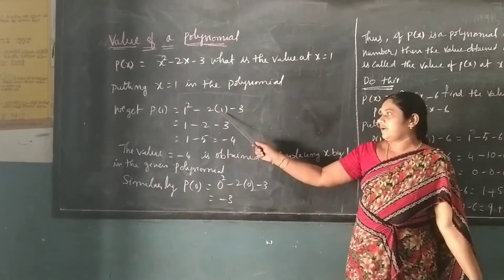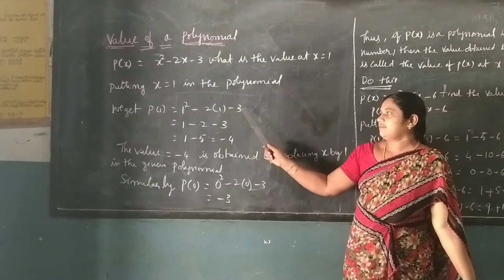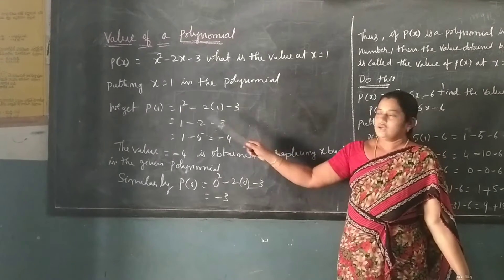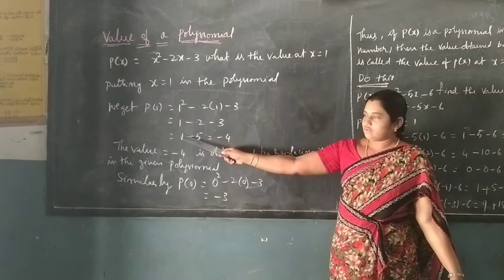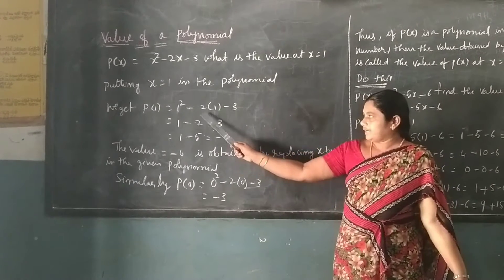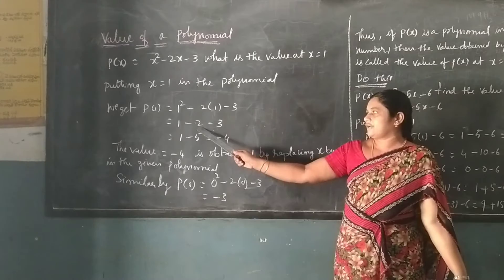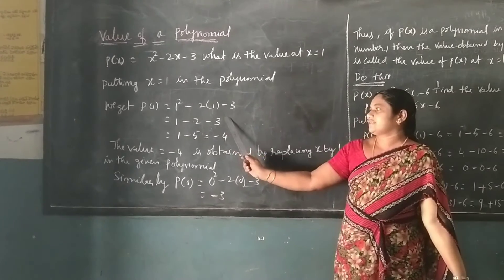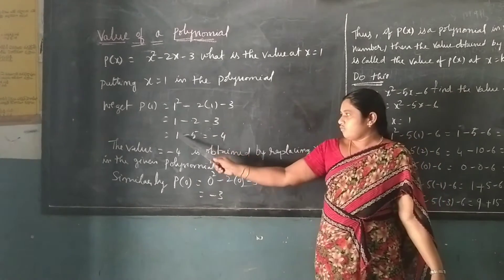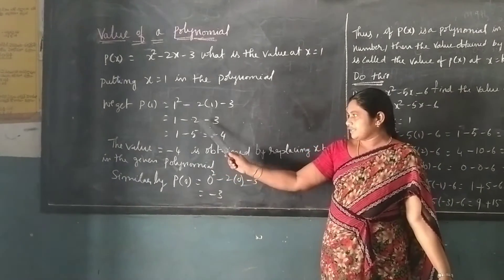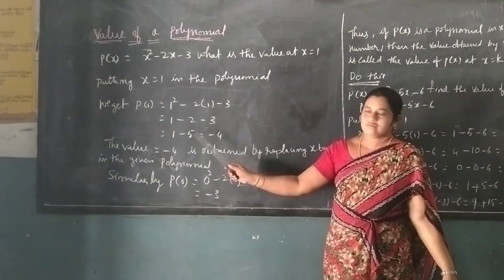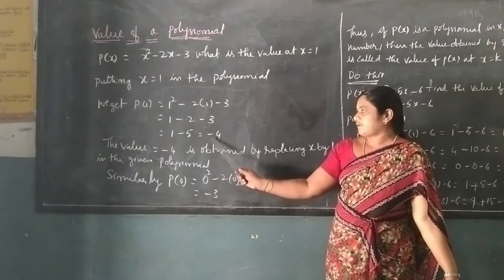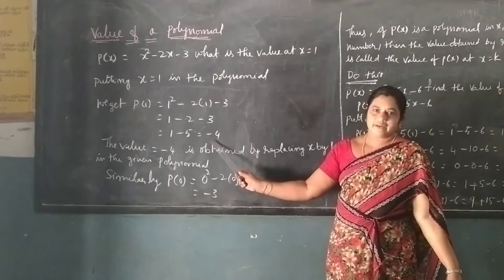So, 1² - 2 × 1 - 3. Now, 1² = 1, so we have 1 - 2 - 3, which gives 1 - 5 = -2. The value of t(1) is equal to -2.